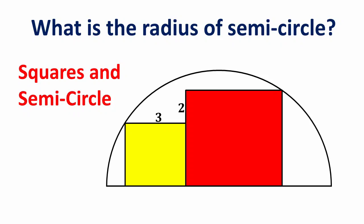The question is what is the radius of this semicircle? In this question, there are two squares inside this semicircle and we have to find the radius of this semicircle.